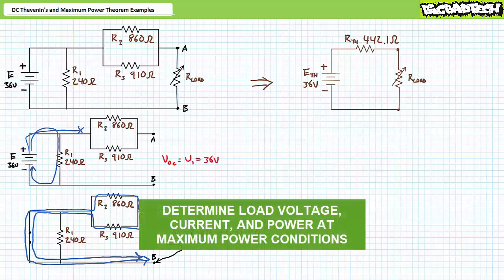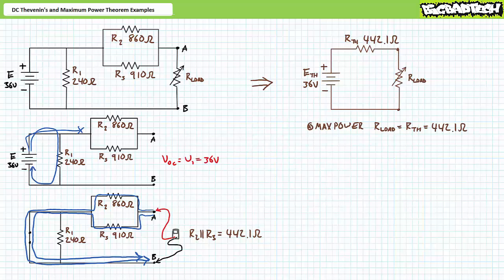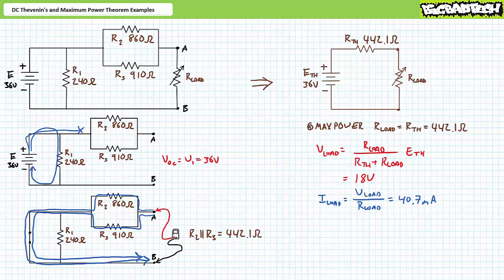Stage two now dictates we determine the load resistance which receives maximum power — solve for voltage, current, and power at maximum power conditions. By all means, pause and try stage two on your own. If you're tracking, you should have obtained the following results. The DC Maximum Power Transfer Theorem states maximum power is transferred when the load resistor equals the Thevenin's equivalent resistance. Therefore, our variable load resistor sees maximum power at a value of 442.1 ohms. The DC voltage divider rule demonstrates voltage across the load is 18 volts; Ohm's law gives a current of 40.7 milliamps; and the DC power formula gives 732.8 milliwatts. Any change in load resistance, less or greater, should result in less power delivery.